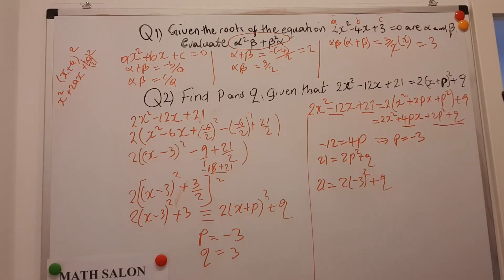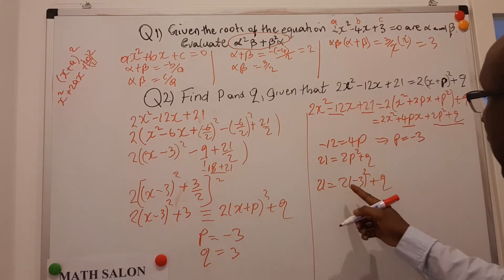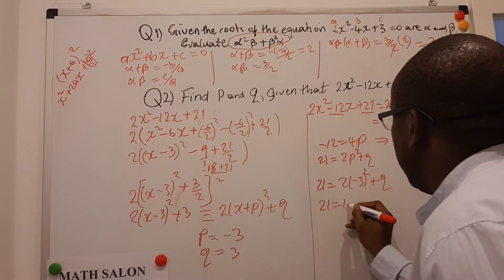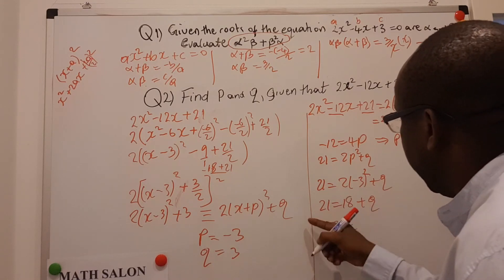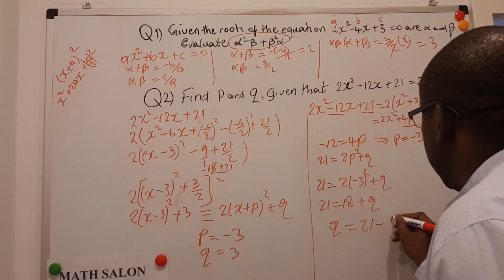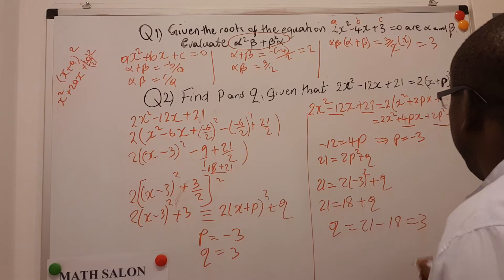Minus 3 squared is 9, 9 times 2 is 18. So 21 is equal to 18, plus q. Therefore, my q is equal to, I take 18 to this side, it becomes 21 minus 18, and that is 3.